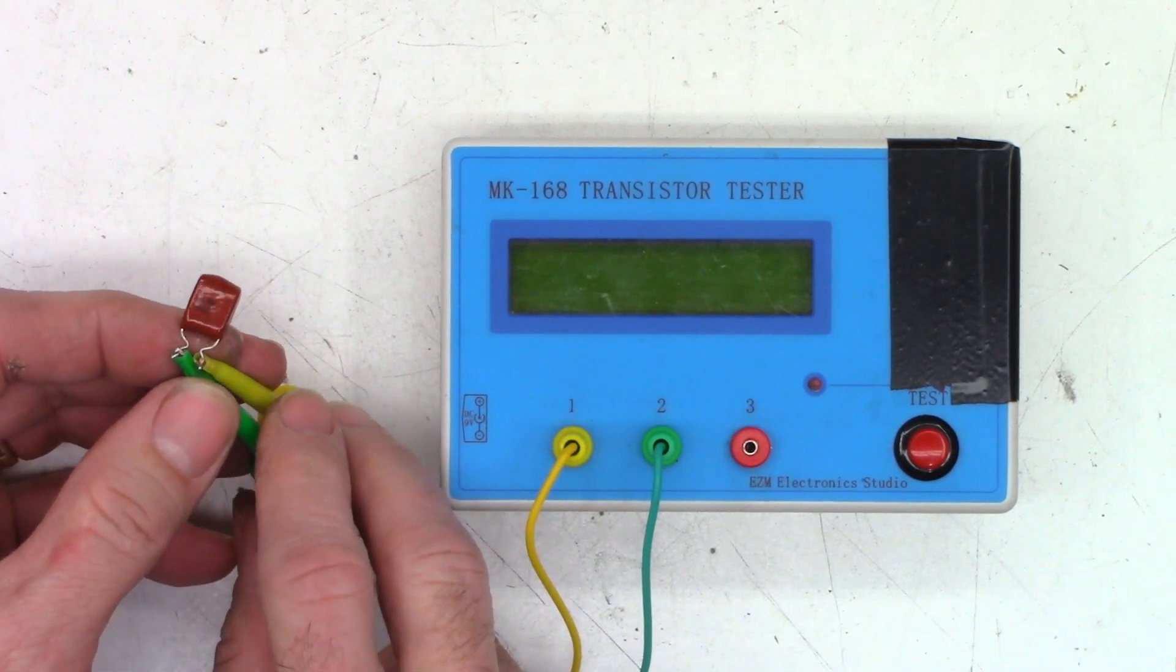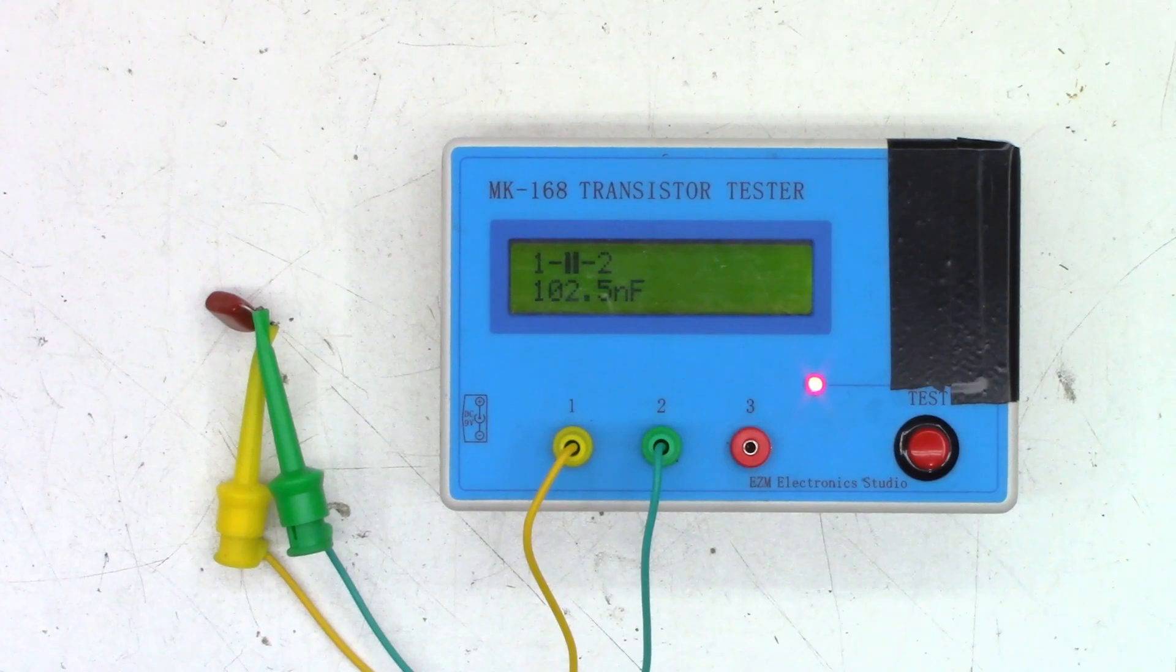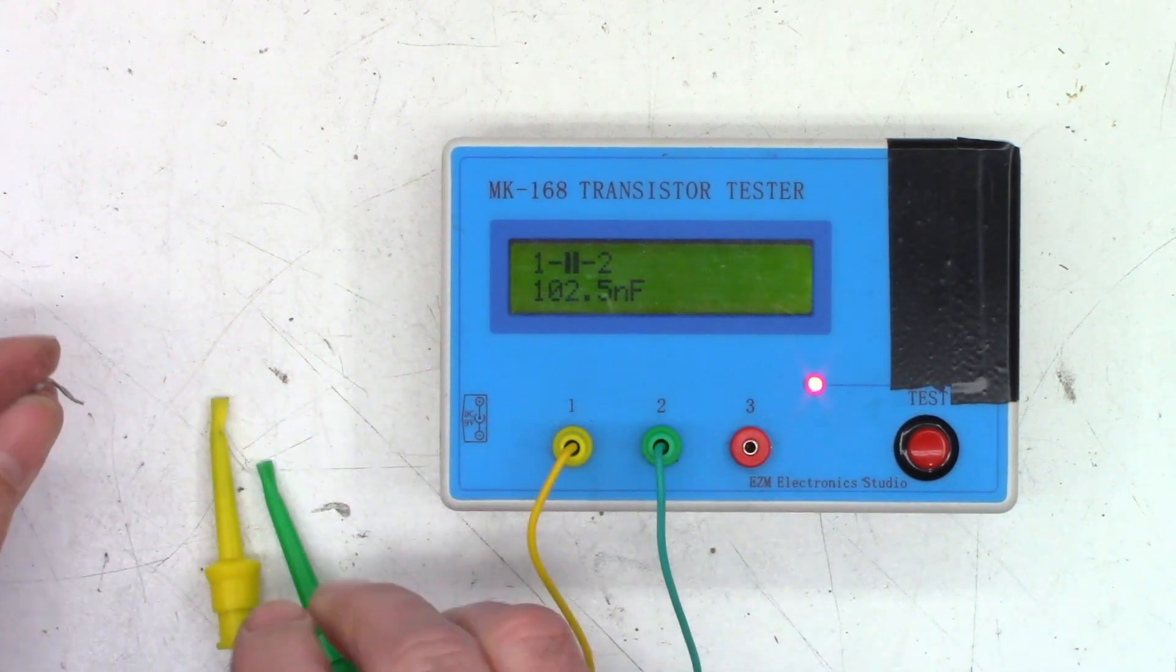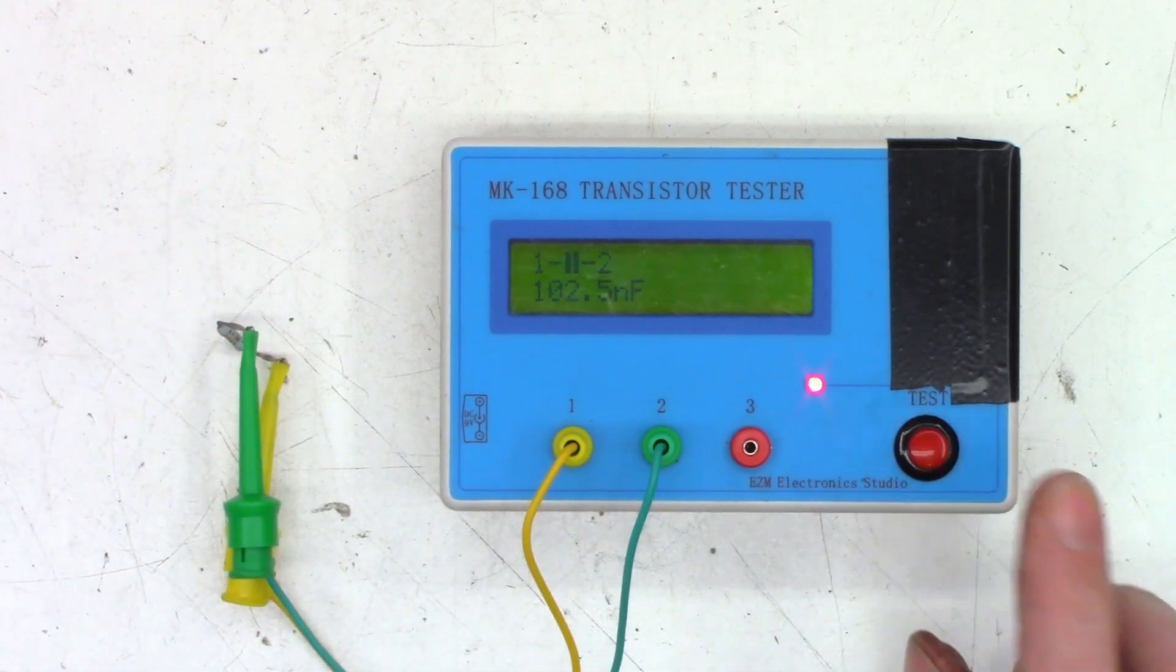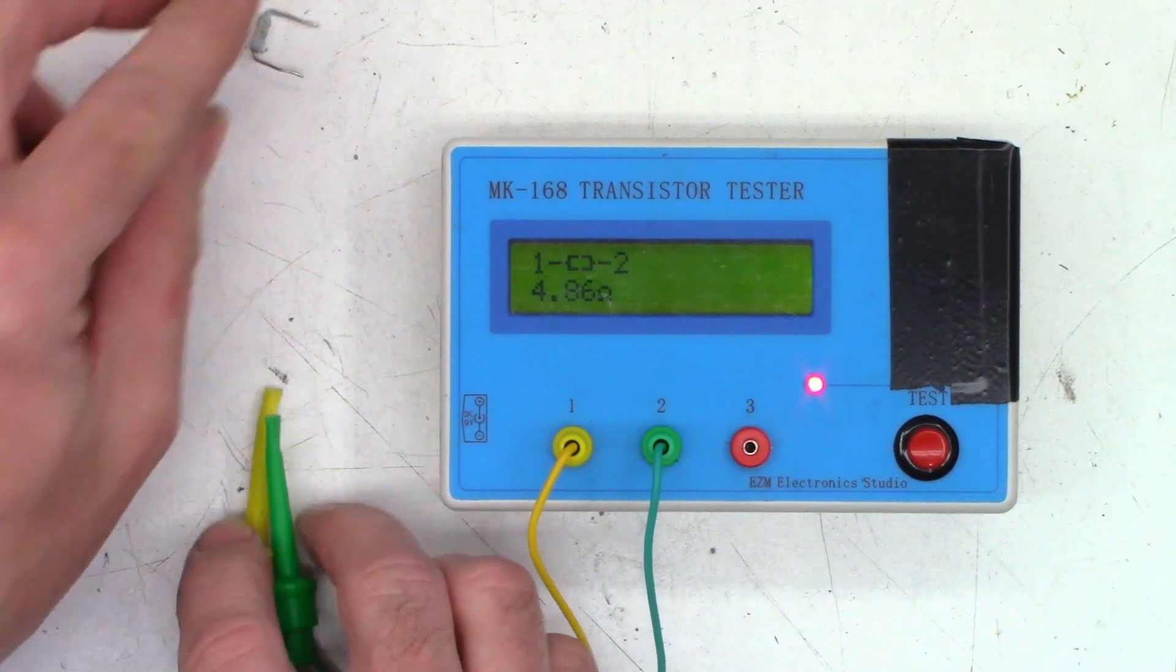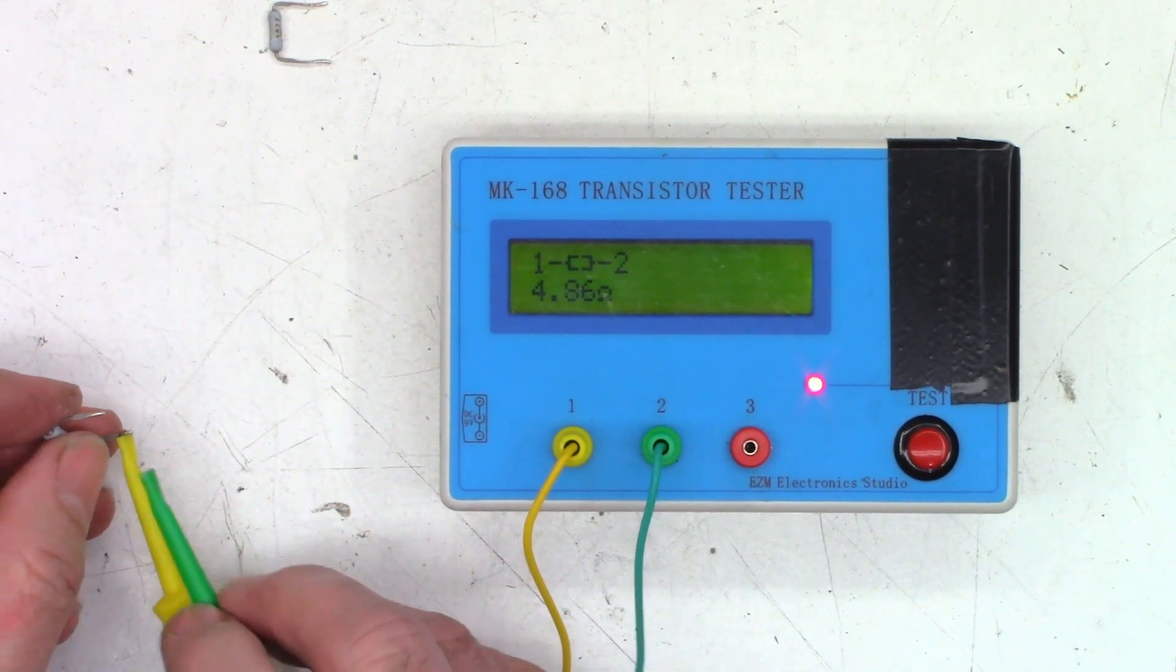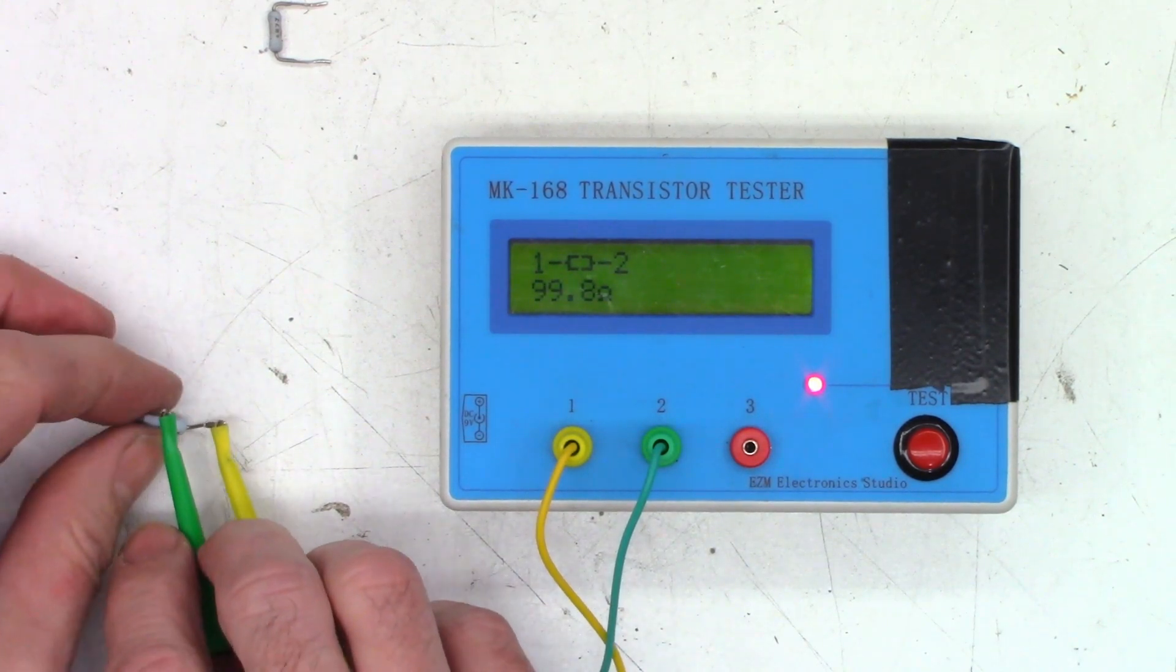This one is a 0.1 microfarad at 100 volts, and it measures 0.1025 microfarads, perfectly happy with that. Now this should be a 4.7 ohm resistor, and it measures 4.86, once again totally within tolerance. This one's going to be a 100 ohm resistor, and it measures 99.8 ohms, that is really close.